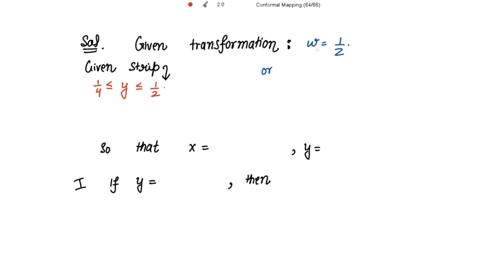w = 1/z can be written as z = 1/w. Now putting the value of z as x + iy = 1/(u + iv), and after rationalizing we get this equal to (u - iv)/(u² + v²). Comparing real and imaginary parts, we get x = u/(u² + v²) and y = -v/(u² + v²).